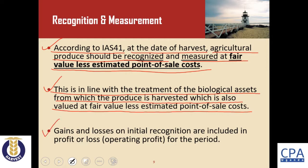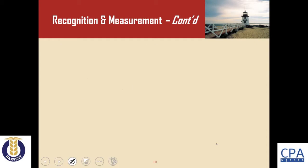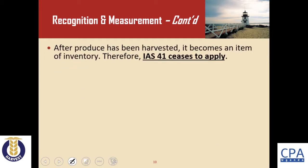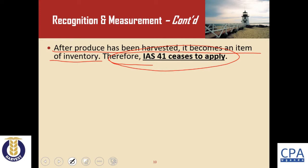Because of this treatment for agricultural produce, gains and losses on initial recognition are included in profit or loss — the operating profit — for the period. After produce has been harvested, it becomes an item of inventory, and IAS 41 ceases to apply from that point on.